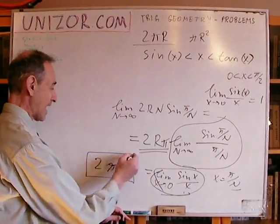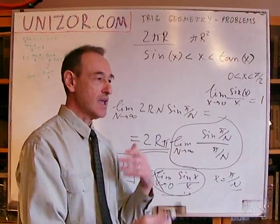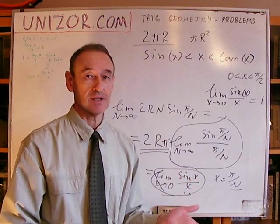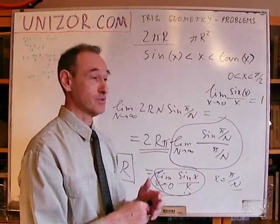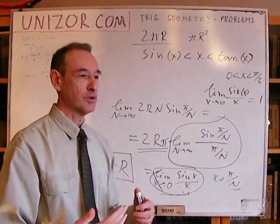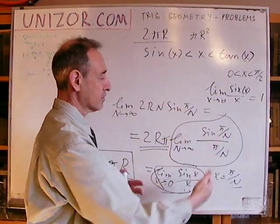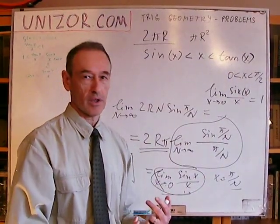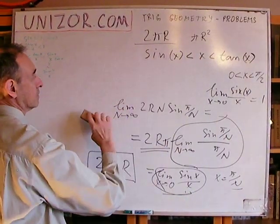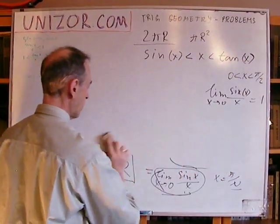That's the formula I wanted to derive. Again, it's not that I didn't know it — I know it from the definition of the radian and geometric properties. But it's interesting to illustrate the connection between trigonometry and geometry. The second part will be about the area, and it will be very similar.